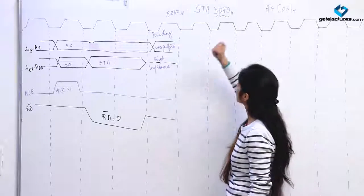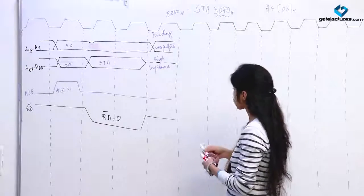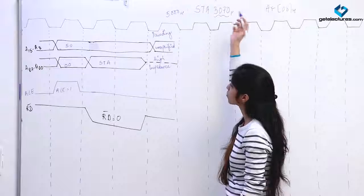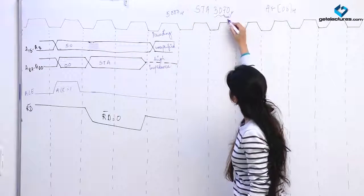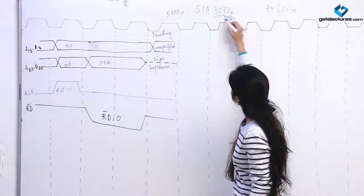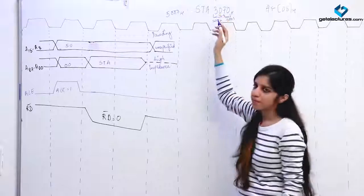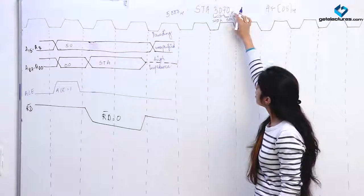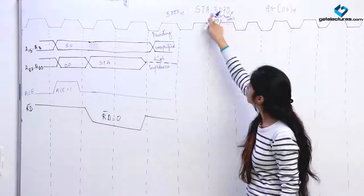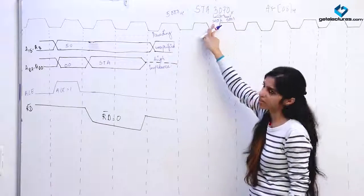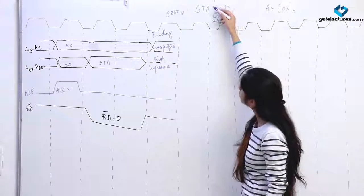One more thing to note: whenever you store an address in memory, for address 3070, the next location 5001 will contain the lower byte (70) and 5002 will contain the upper byte (30). The lower bits of the address are stored at the lower address and higher bits at the higher address. So firstly we are going to get 70, then we are going to bring 30.